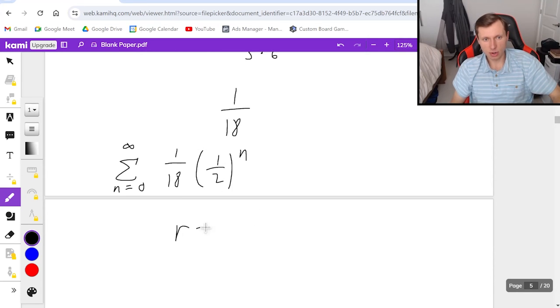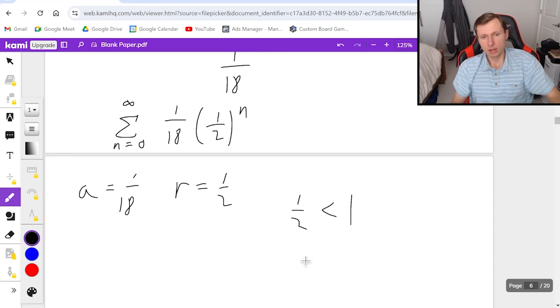And now I say r equals one half, a is one over 18. One half is less than one, which means we are converging because it's a geometric series. And I can find the sum.